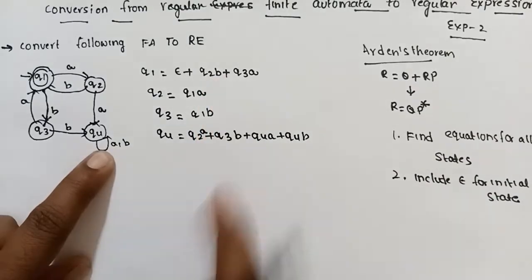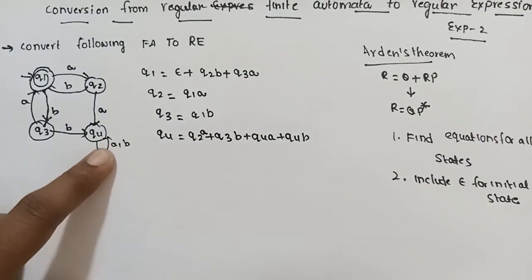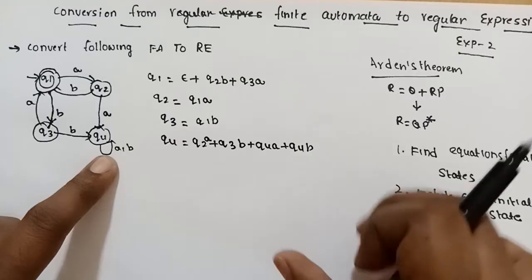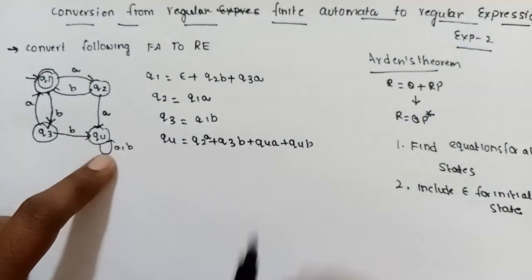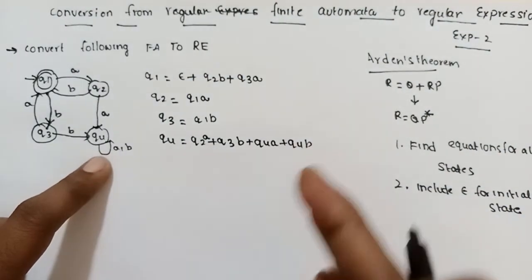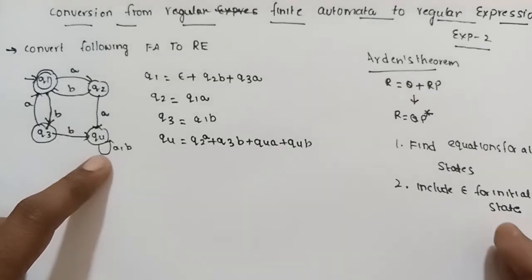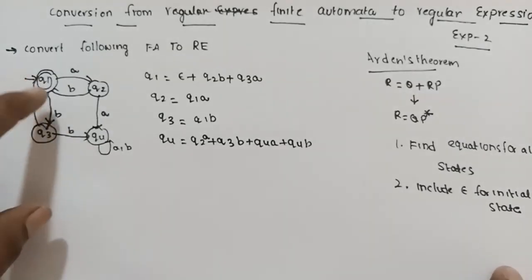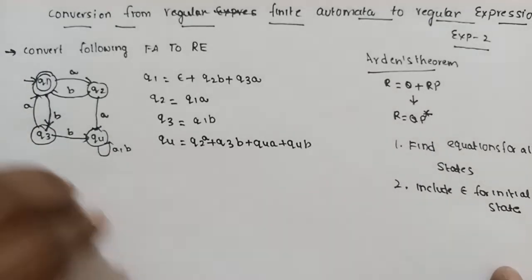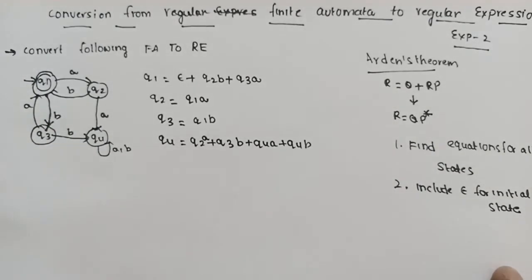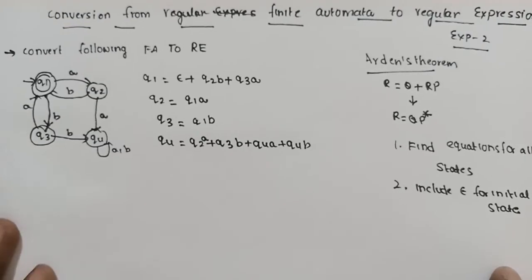This is the Q4 equation. Here is the initial equation. If we have a final state, then we have its final state regular expression. This will help us find the final state — we show the final state for the regular expression.